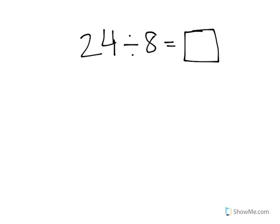In this video we're going to look at how repeated subtraction is the same thing as doing division. In this problem we have 24 divided by 8 equals blank.